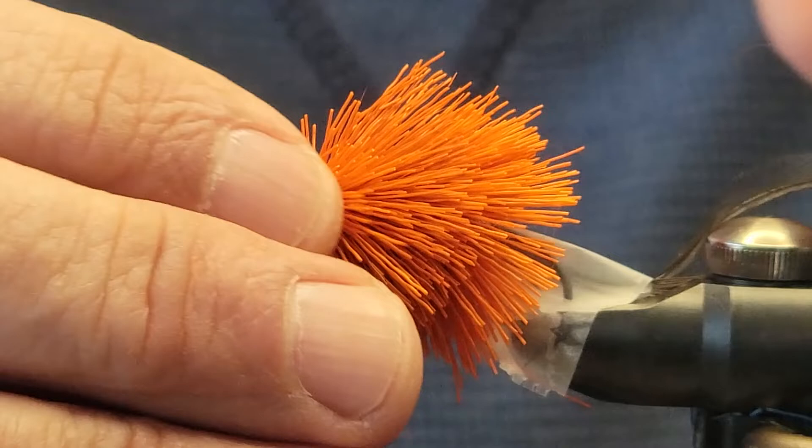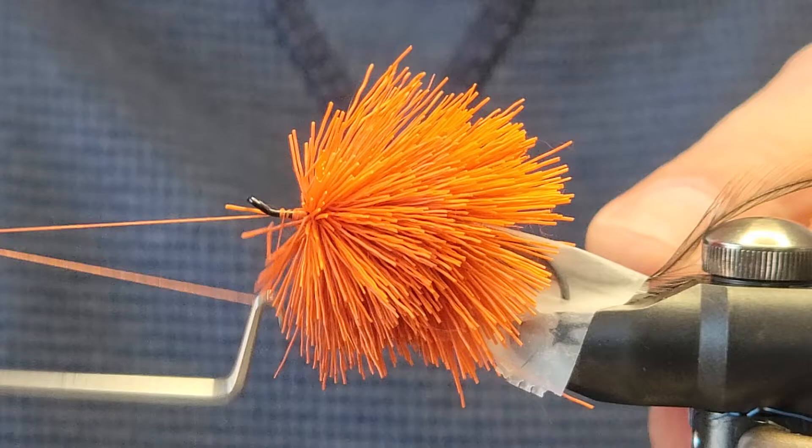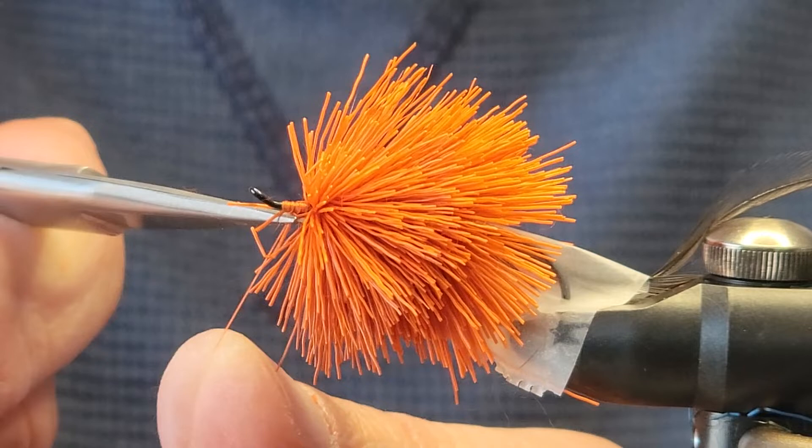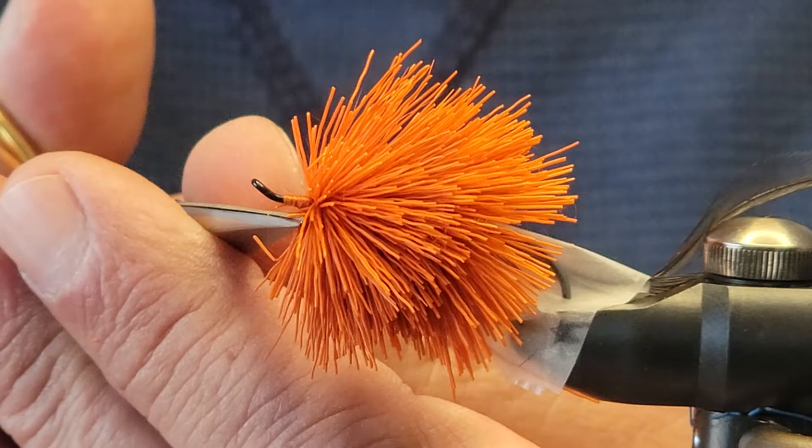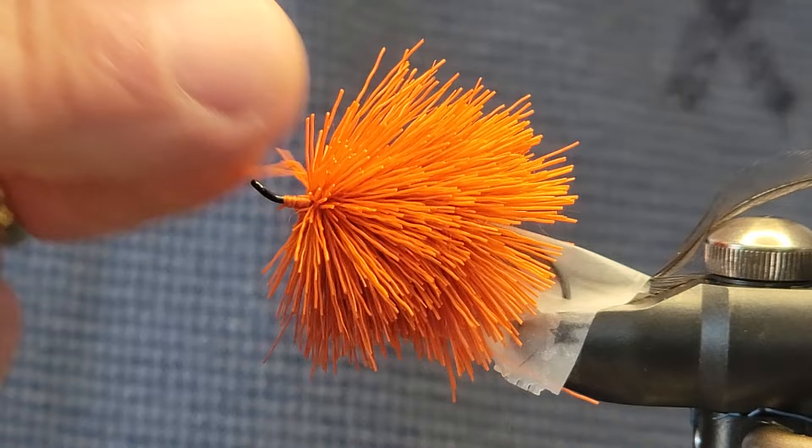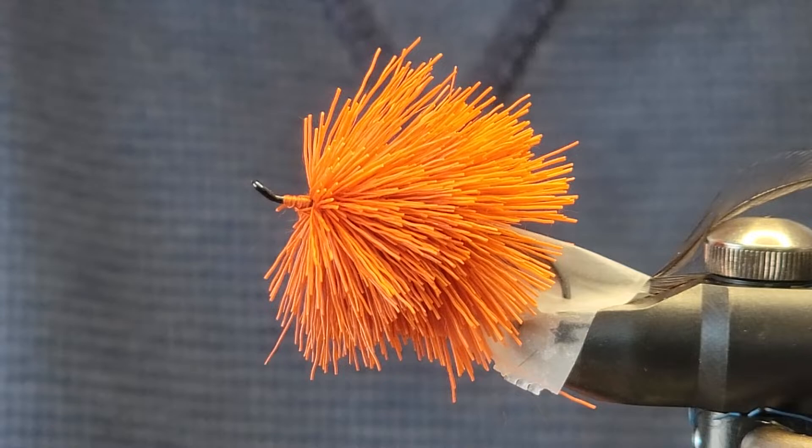Just grab a little whip finish. We're not done, we're just getting our thread out of the way. We'll just start getting rid of some of these at the front here. Now it helps if you have a rotary vise, if not you can just take the fly out and put it back in and turn it.